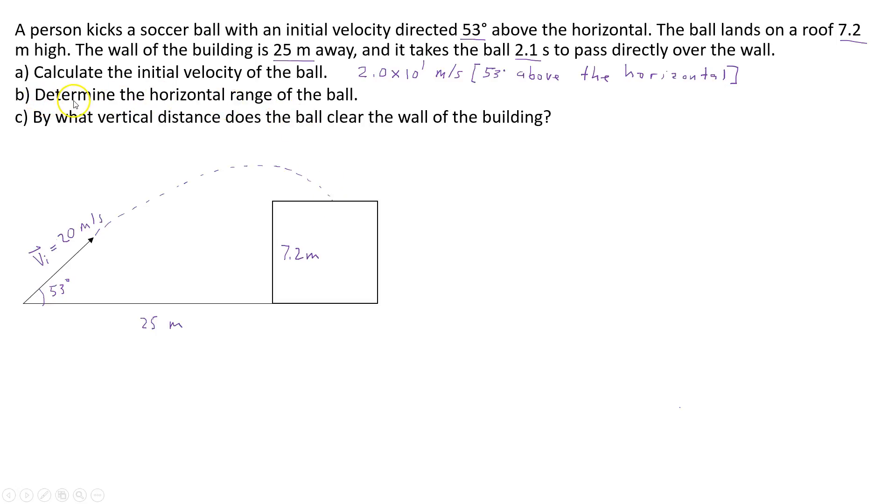So in part B we need to solve for the horizontal range of the ball. And that means the total horizontal distance that the ball travels. And so that would be the distance from the starting point to the point on the roof. So it's no longer going to be 25 meters as it was in part A for the horizontal distance. Instead now we have to find the horizontal distance of the ball.